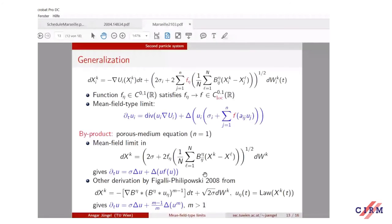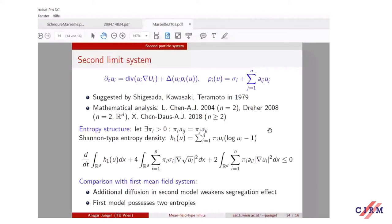Let us consider this limit system here written with f̃. I said that these dynamics have been suggested already in the 1970s by Shigesada and Teramoto.